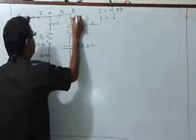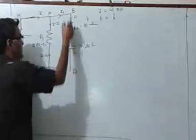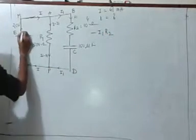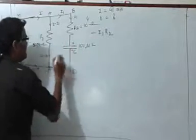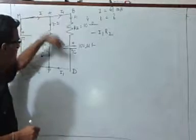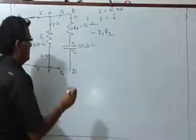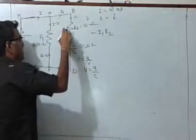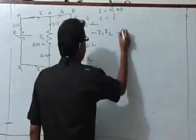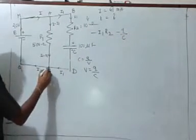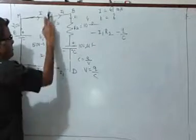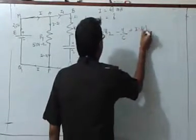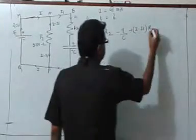Let us consider the loop A, B, D, E, A. As we are travelling in the direction of current across the resistor R2, the voltage will drop, so I write minus I1 R2. The capacitor has a positive and negative terminal, and as we go from plus to minus across it, the voltage drops. Since C equals Q upon V, we can write V as Q upon C, but it is dropping, so it is minus Q upon C. Then travelling from P to A, which is opposite to the direction of current, the voltage drop across R1 is positive: plus (I minus I1) into R1. The sum total is zero.